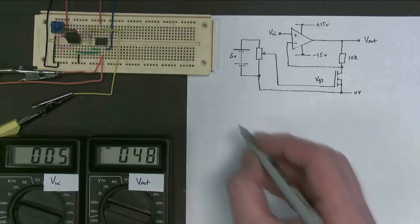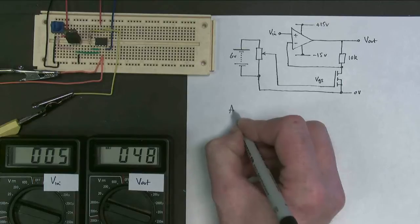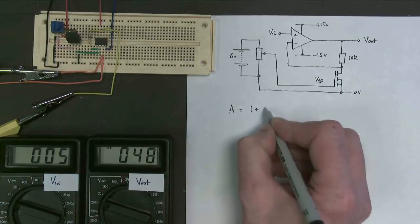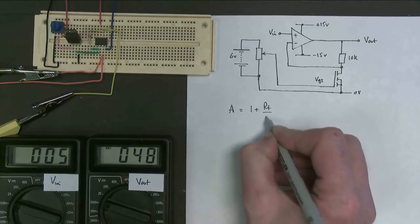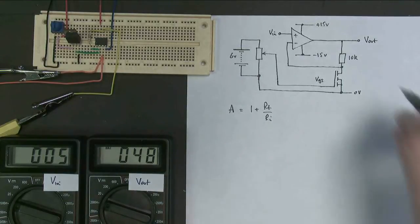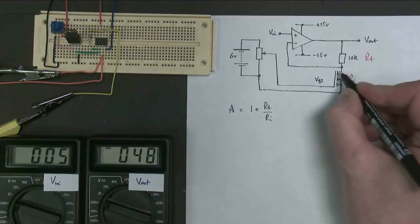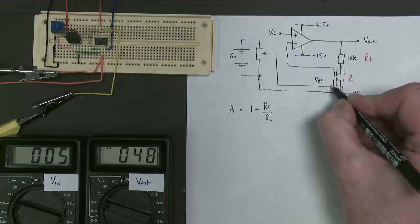And I should note that for a non-inverting amplifier, which this one is, the gain equation is 1 plus RF over RI. And on my diagram, this is my RF and this is my RI. So the MOSFET is behaving as a resistor.